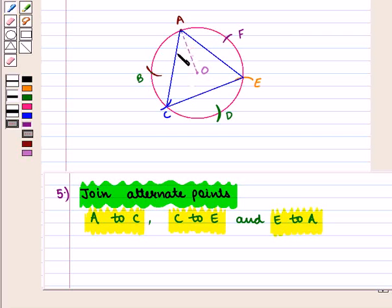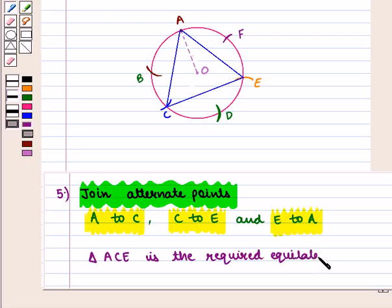Thus, triangle ACE is the required equilateral triangle. This completes our session. Hope you enjoyed this session.